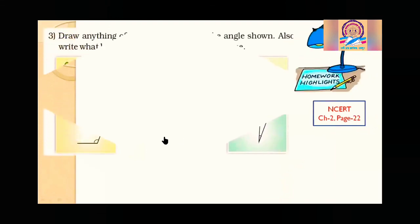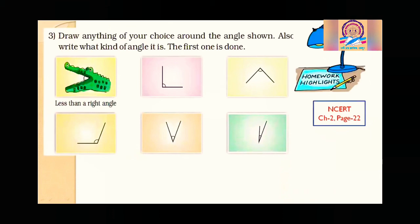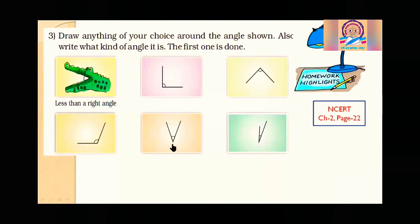Now homework on page number 22: draw anything of your choice around the given angle and write what kind of angle it is. The first one is done for you — a crocodile with its open mouth showing less than 90 degrees. You can make a book open at exactly 90 degrees, or other shapes. Similarly, identify more than 90 and less than 90 degree angles and complete the activity.